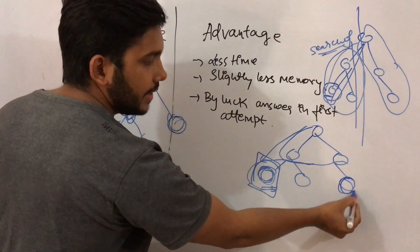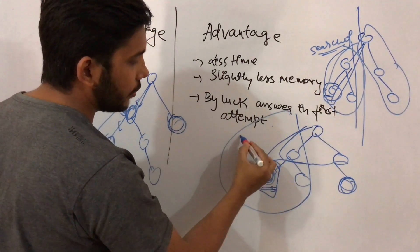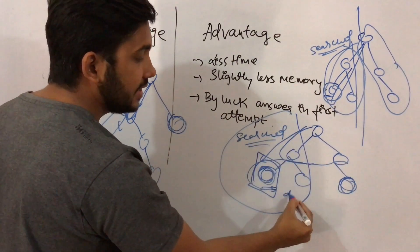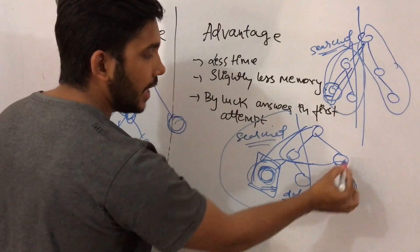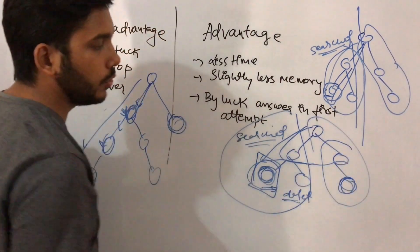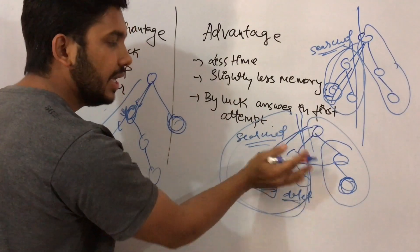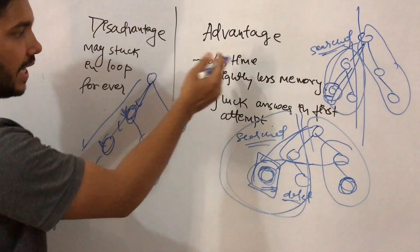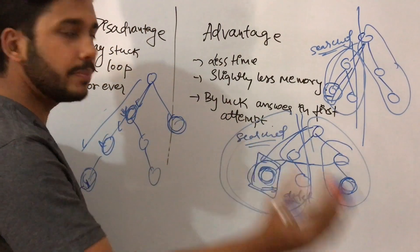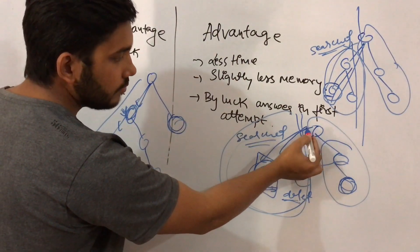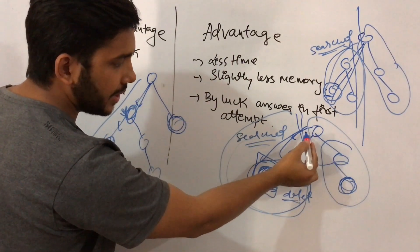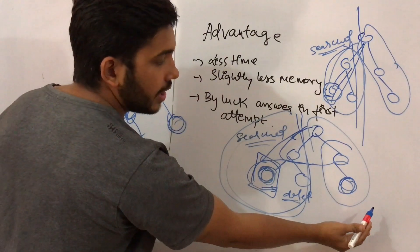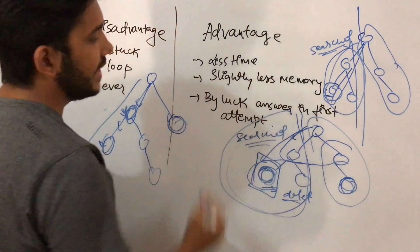It takes slightly less memory because once you have completely searched a part of the tree, that part is deleted from memory and only the part currently being searched is kept. Depth first search also takes slightly less time than breadth first search because you are searching on a particular depth and you don't need to keep all the remaining parts of the nodes in memory.